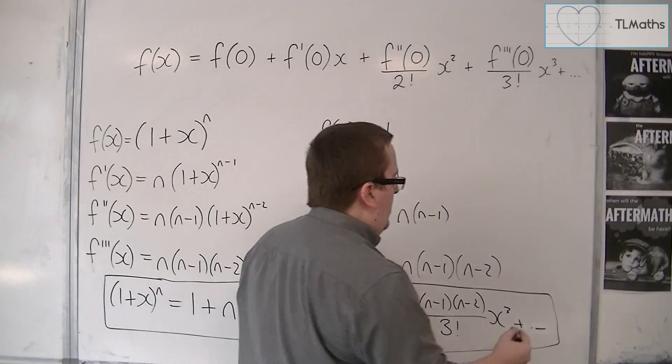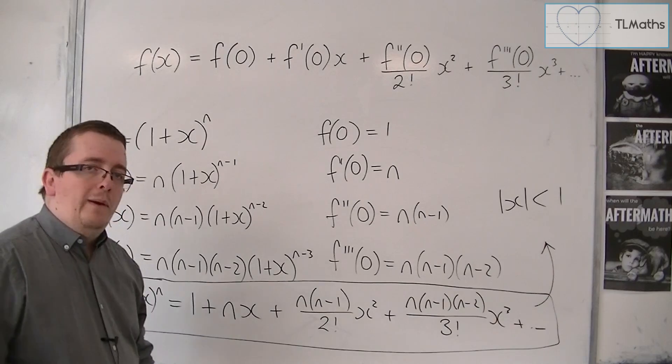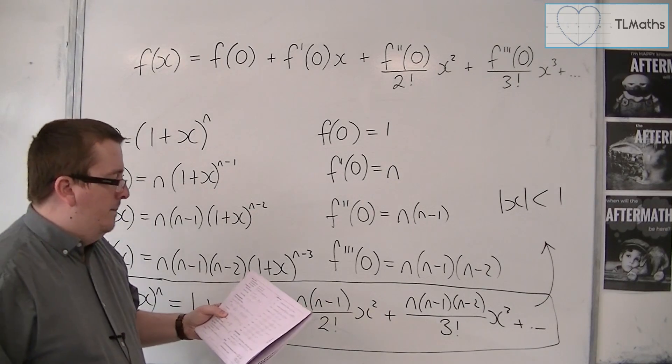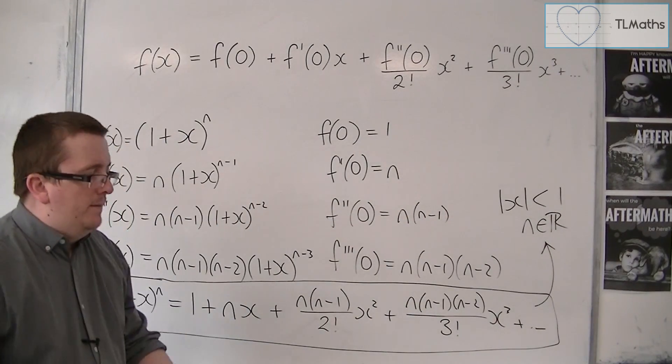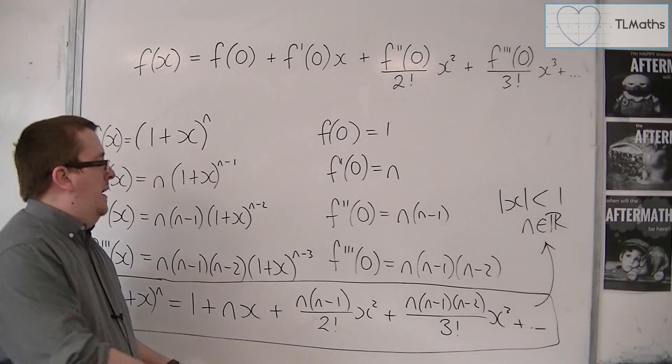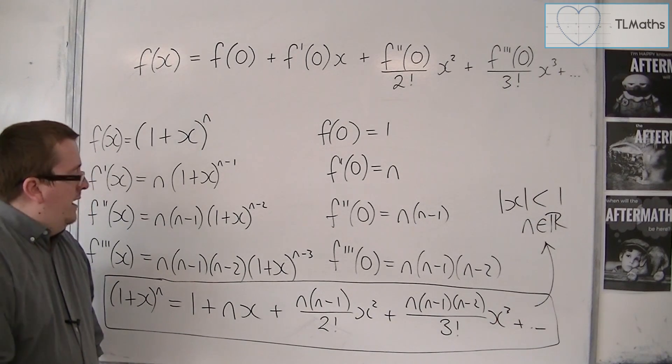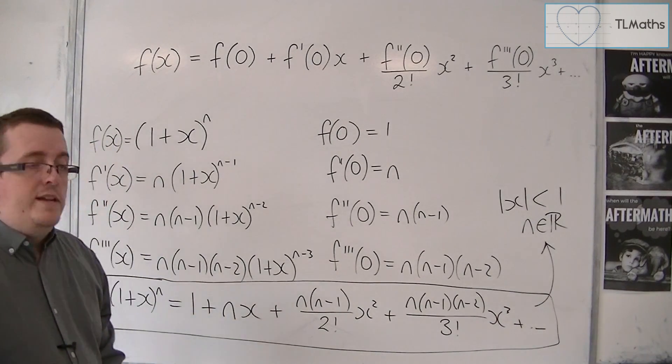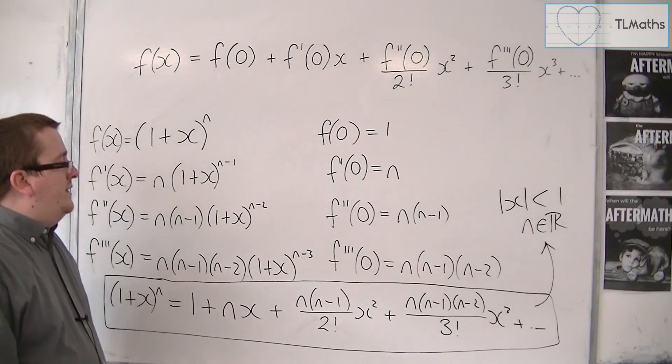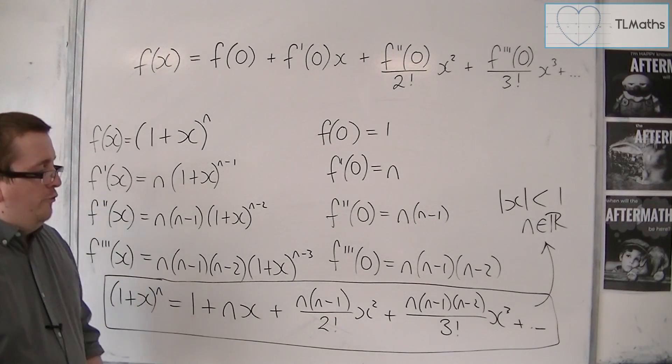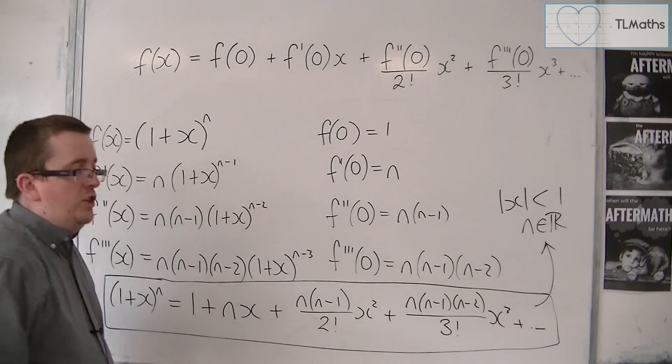And then it says right at the end that this only works when mod x is less than 1. So x is between minus 1 and 1. And n here is taken to be any real number. So that allows it to be the value n there to be minus 1, minus 100, minus 100 over 3, 5 sevenths, whatever you like. You could have it as pi if you like. Any real number and it will work. That expansion will work for us.